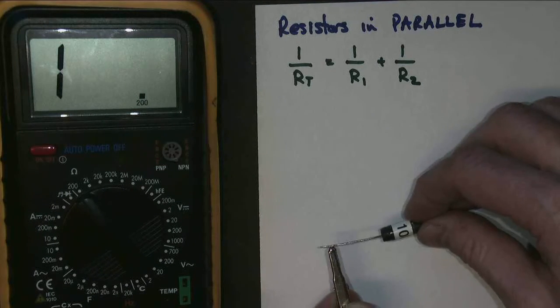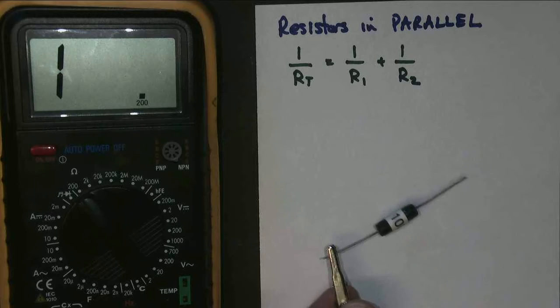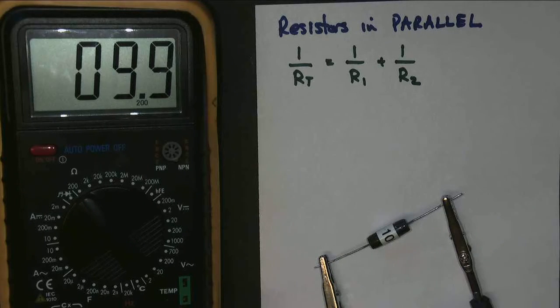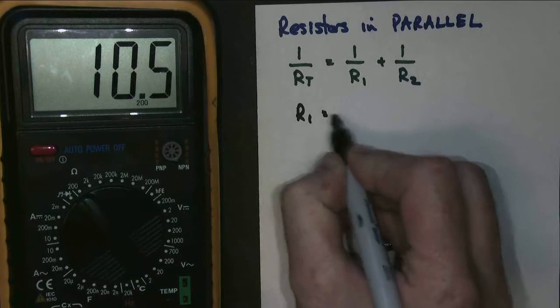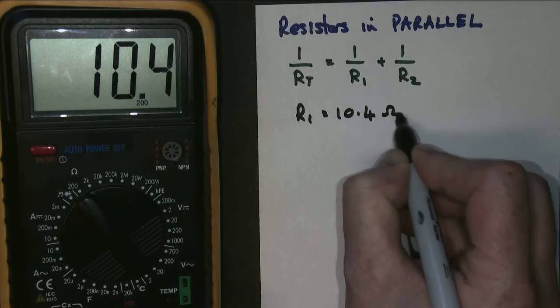So here's our first resistor. Connect it to our multimetre. And we come up with the same as we did before, which is jolly good. So R1 equals 10.4 ohms.